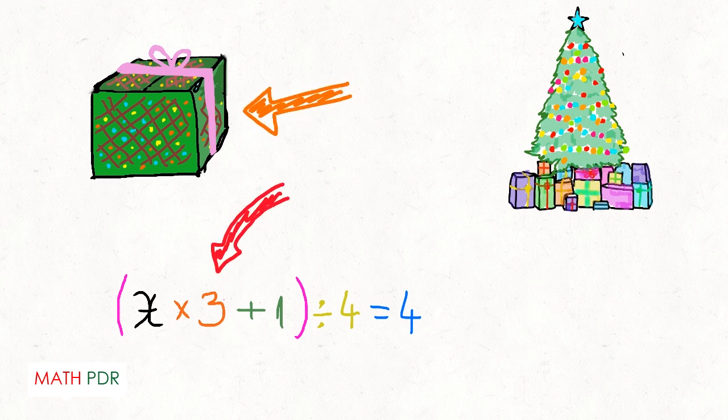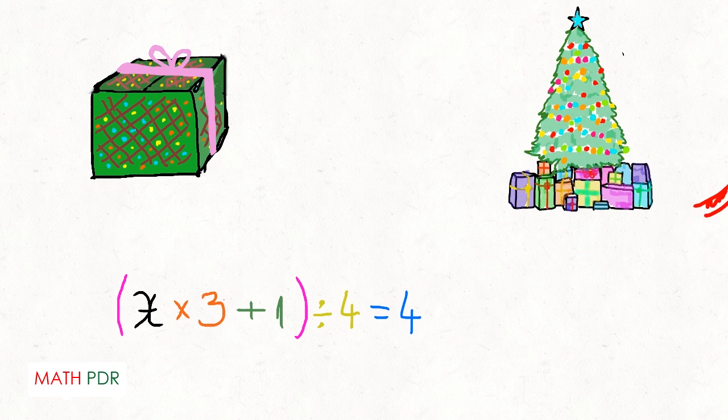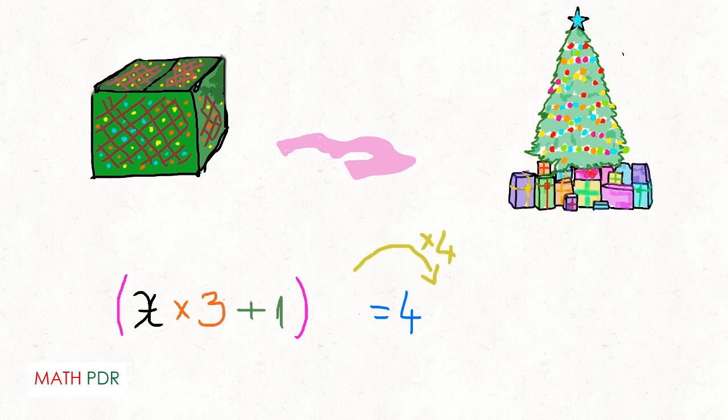We will need to extract our gift by working backwards. We untie the gift, the exact opposite of tying the gift, which for the equation means to carry over 4 using multiplication as opposed to division.